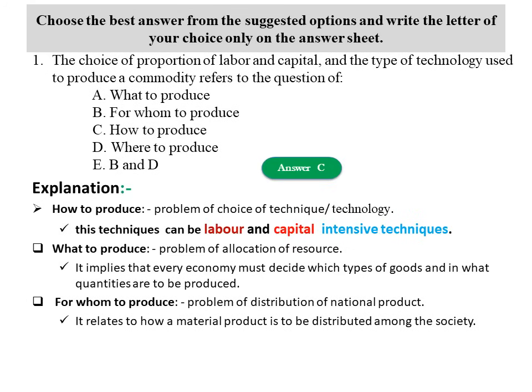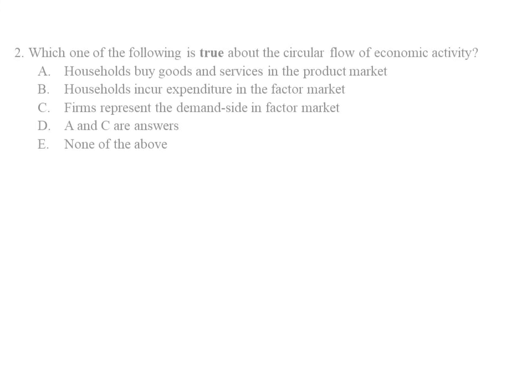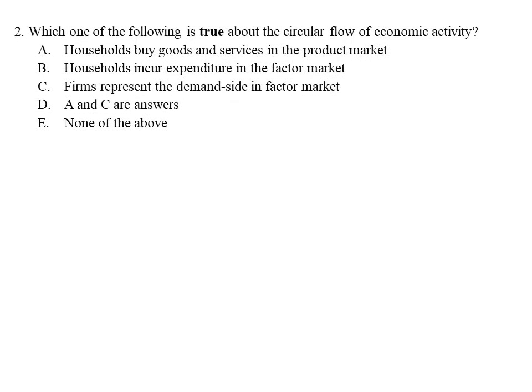Question two: Which of the following is true about the circular flow of economic activity? A) Households buy goods and services in the product market. B) Households incur expenditure in factor market. C) Firms represent the demand side in the factor market. D) A and C are correct. E) None of the above. The answer is D, A and C are correct.